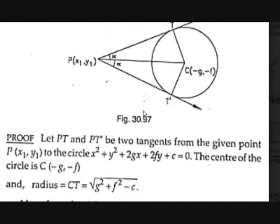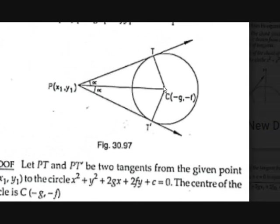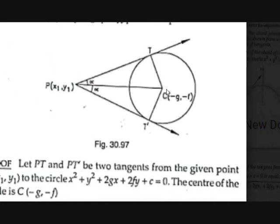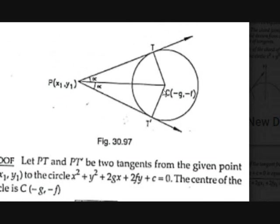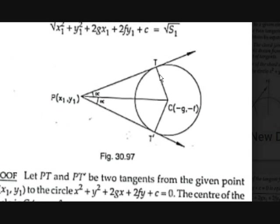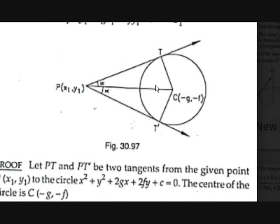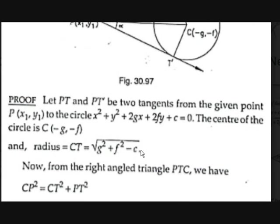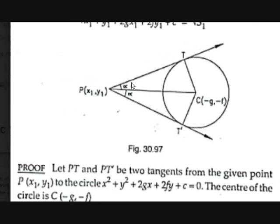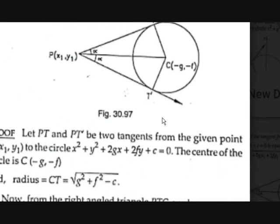The radius formula gives CT = √(g² + f² − c). In this picture, we know that PTC is a right-angle triangle, where CT is the radius and PT is the tangent.